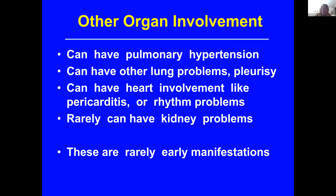Other patients may have pulmonary arterial hypertension, heart involvement, or some patients have pleurisy — chest pain when you take a deep breath — similar inflammation around the lining of the heart, or rhythm problems of the heart. Any organ really can be involved. Fortunately, most patients do not have the serious kidney involvement of scleroderma or the kidney involvement of lupus, and most of these are rarely early manifestations.